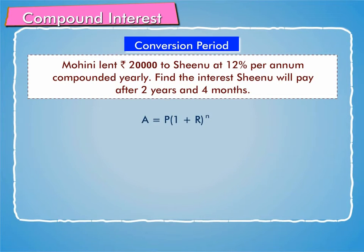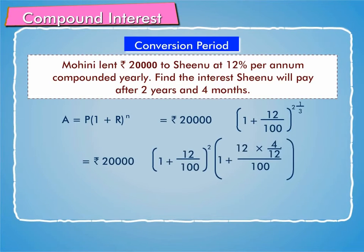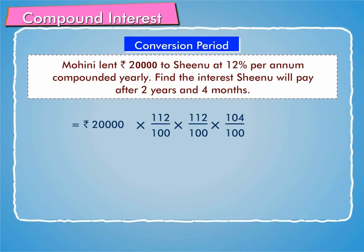Therefore, A is equal to P into (1 plus R) raised to power N, which equals Rs. 20,000 into (1 plus 12/100) raised to power 2 and 1/3. This equals Rs. 20,000 into (1 plus 12/100) squared into (1 plus 4/100), which equals Rs. 20,000 into (112/100) into (104/100).